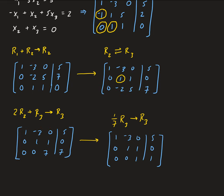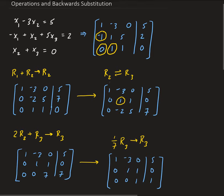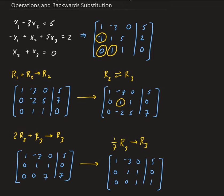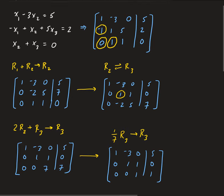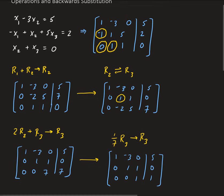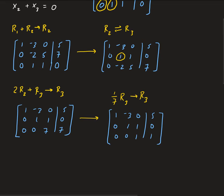From here, we could continue with row operations to put this in reduced row echelon form, but instead I want to solve this using backward substitution. I'm going to number the equations: this is equation 1, equation 2, and equation 3.